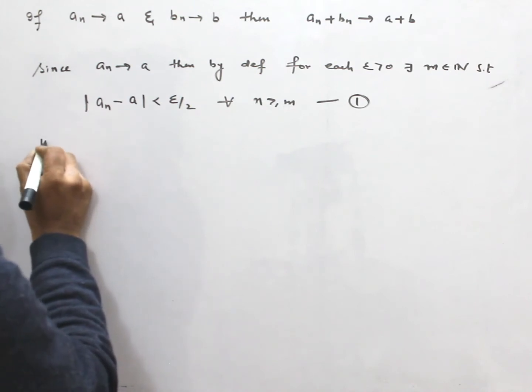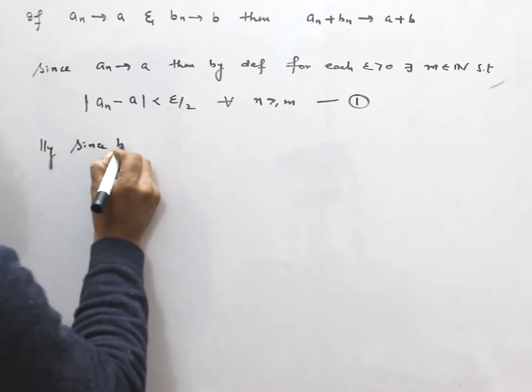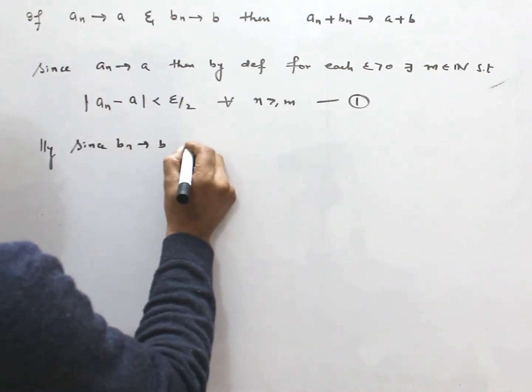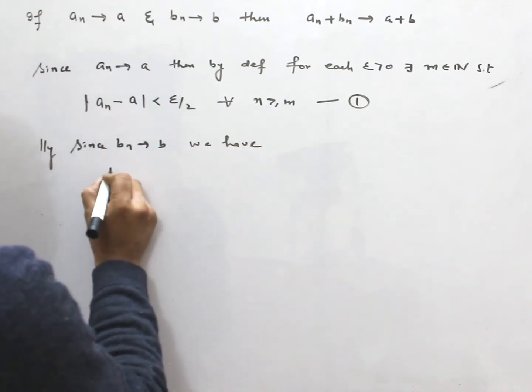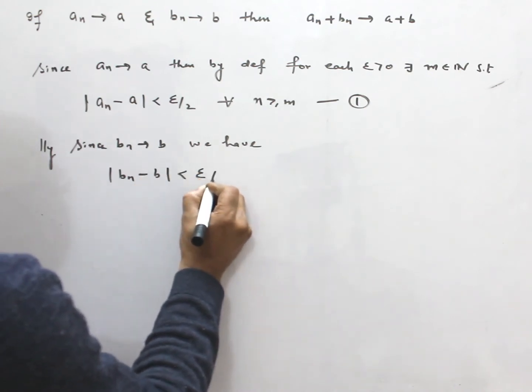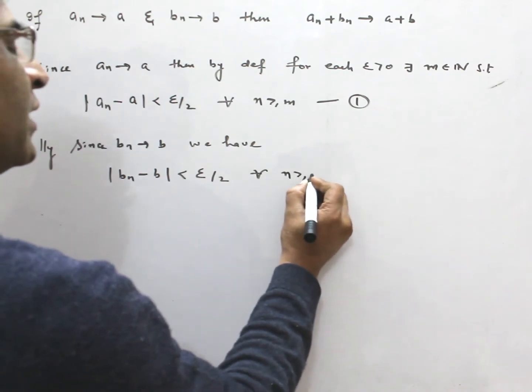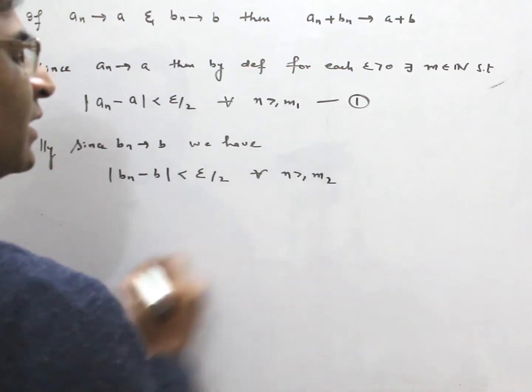Similarly, since Bn converge to B, we have |Bn - B| < ε/2, for all N greater than M2. This I take 1, this I take 2.